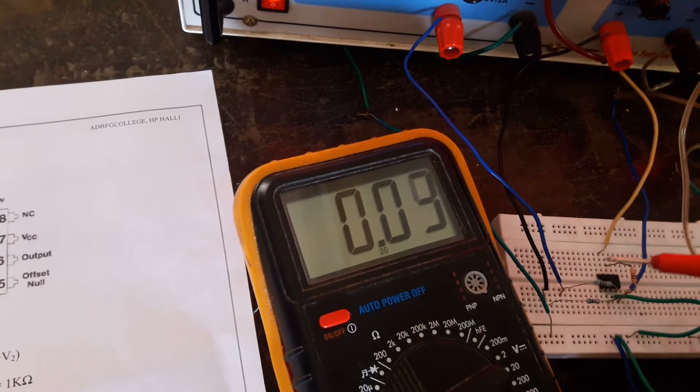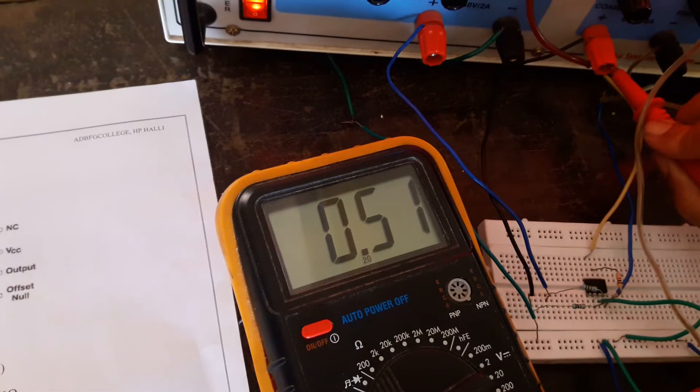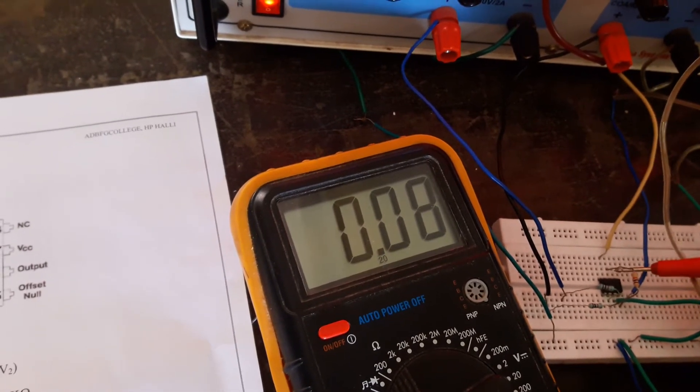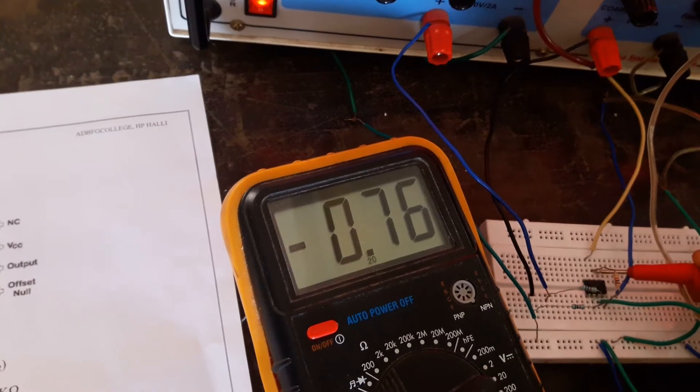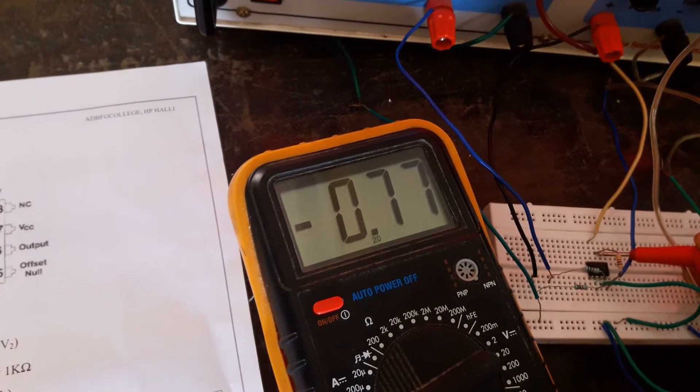The first input voltage is 0.24 and the second input voltage is 0.51. Output should be taken at pin number 6. You will get a negative sign, that is 0.77. Now I will tabulate this reading.